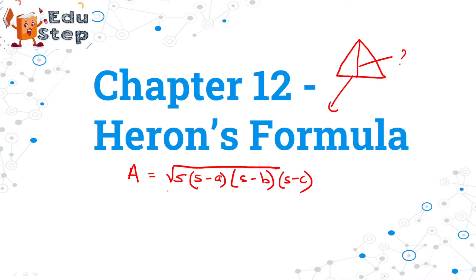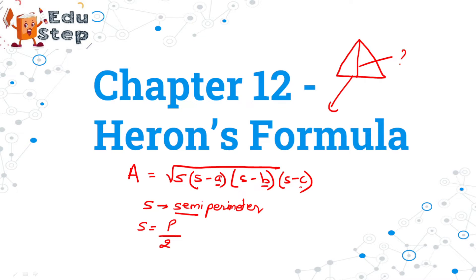S is the semi-perimeter. Semi-perimeter is calculated as perimeter of triangle divided by two — 'semi' means half, so we divide our perimeter into two parts. A, B, C are the sides of our triangle. So far we have completed Exercise 12.1 and the first six questions of 12.2. Now we are going to discuss the remaining three questions, the last three questions of this chapter.